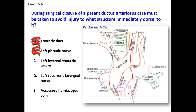The left phrenic nerve passes in front of the structures that form the root of the lung. The left internal thoracic artery is a branch of the left subclavian artery; when it descends, it descends on the posterior aspect of the anterior thoracic wall on either side of the sternum, and it is not related to the dorsal aspect of the ligamentum arteriosum or the patent ductus arteriosus. So the answer is option D — the left recurrent laryngeal nerve.